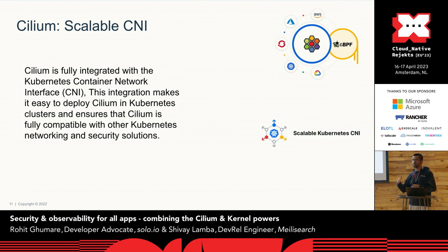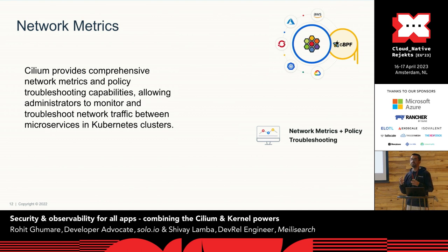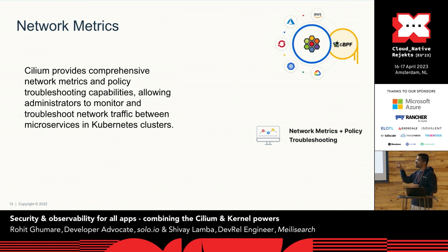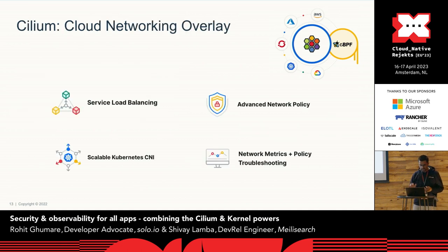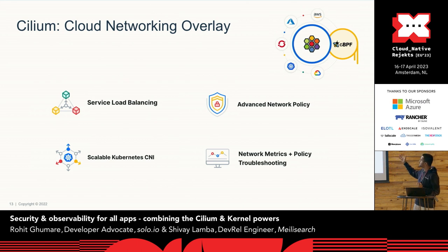Cilium also provides network policies: standard Kubernetes network policies and Cilium network policies that allow not just identity-based policies but also global policies and policies enforced at the application layer — HTTP requests or gRPC-based requests. You can define global-level policies for your entire architecture. Since Cilium comes inbuilt with a CNI, it has full capability to scale with any Kubernetes cluster — you can run Cilium agents on every node and easily spin up new agents as you add nodes.